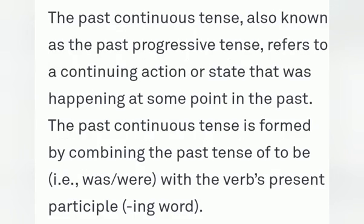The past continuous tense, also known as the past progressive tense, refers to a continuing action or state that was happening at some point in the past. The past continuous tense is formed by combining the past tense of 'to be' — that is 'was' or 'were' — with the verb's present participle, meaning the verb plus '-ing'.